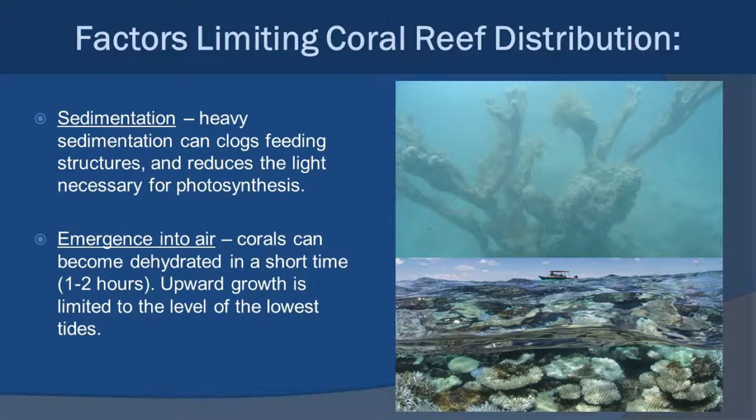Sedimentation is another important component related to light penetration. If you have a lot of sediment in the water column, that's going to kill your corals. This is why you don't see coral reefs at the mouths of rivers, even in the tropics — corals need clear water. Dredging operations in the area can also silt up the water and cause a lot of damage to growing corals.